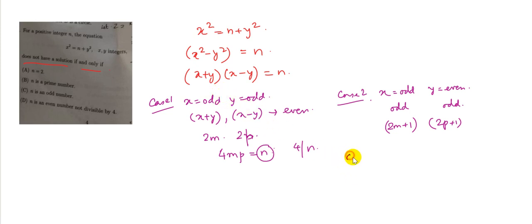Then case 3. If x is even and y is even, then obviously x plus y and x minus y are both even. So even in that case, x plus y would be of the form 2m and x minus y would be 2p. So this would be 4mp. Therefore, 4 will be a factor of n.